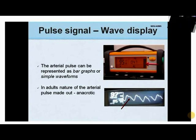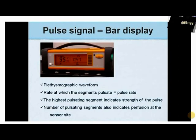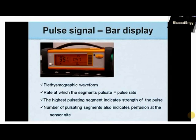In adults, the nature of the arterial pulse can easily be discerned, which is usually anacrotic with a clear notch. When the pulse is presented as bar graphs, the rate at which the segments pulsate is equal to the pulse rate. The highest pulsating segment indicates the strength of the pulse, and the number of pulsating segments indicates perfusion at the sensor site — the more the segments, the stronger the perfusion.